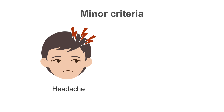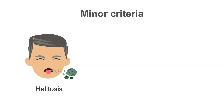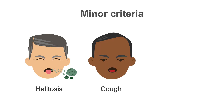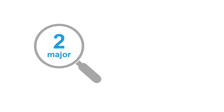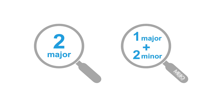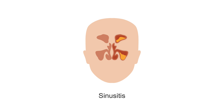The minor features include headache, fatigue, halitosis, cough or dental pain. Two major criteria or one major criteria and two minor criteria are needed to support a diagnosis. The most likely locations for sinusitis are within the maxillary and ethmoid sinuses.